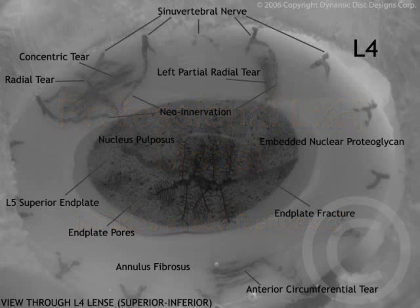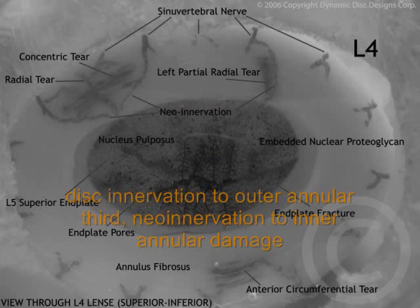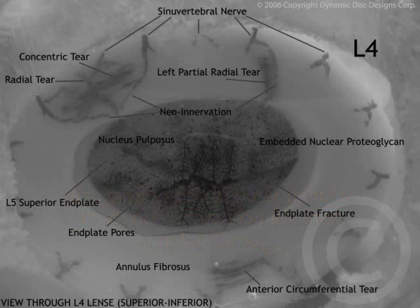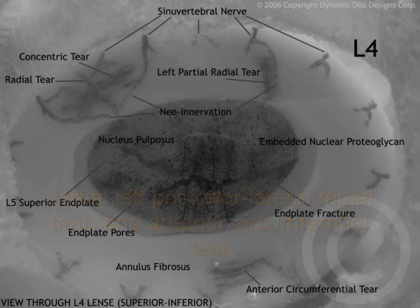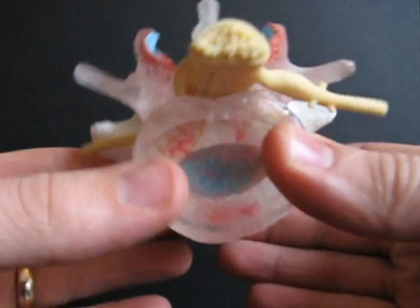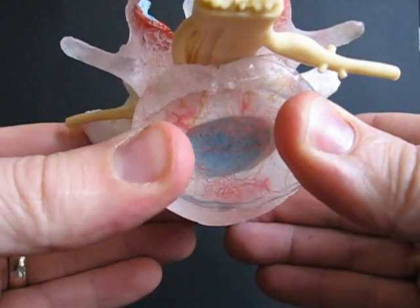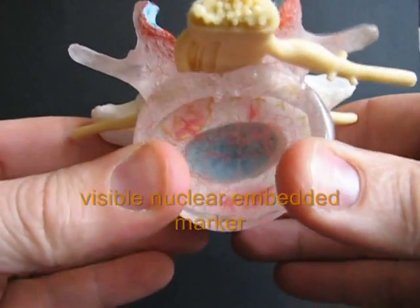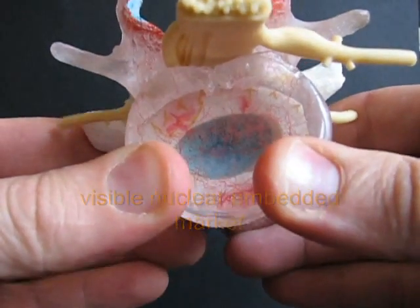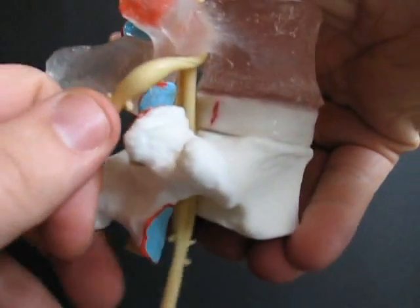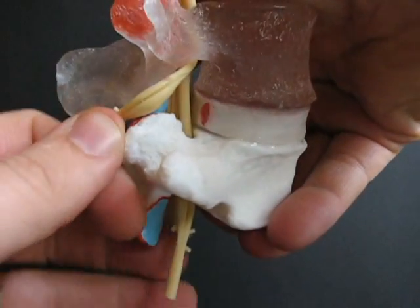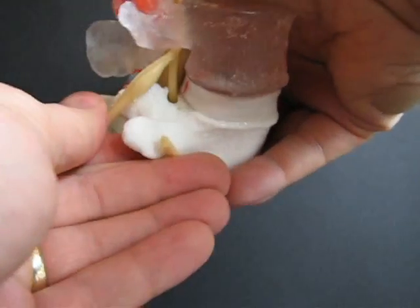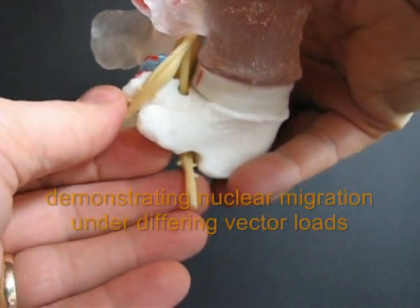The professional model includes all of this plus the sinuvertebral nerve, which is demonstrated here, neoinnervation into the inner two-thirds of the inner radial tear, and anterior circumferential tear. We've also designed a visible embedded nuclear marker, so the nucleus can be demonstrated to move under different vector loads.